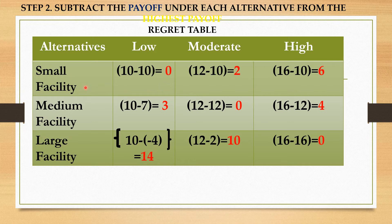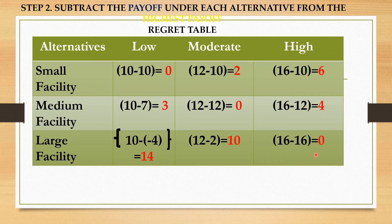These zeros — under 'Low' for small size facility, 'Moderate' for medium size facility, and 'High' for large size facility — represent zero amount of regret, meaning nothing to regret about. If you decided to construct a small size facility and demand became low, there is no regret. The red amounts in the table represent your regret — the opportunity cost or benefits forgone if you had chosen a different alternative.